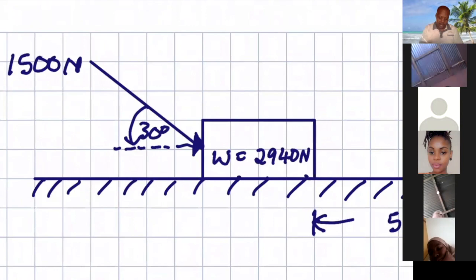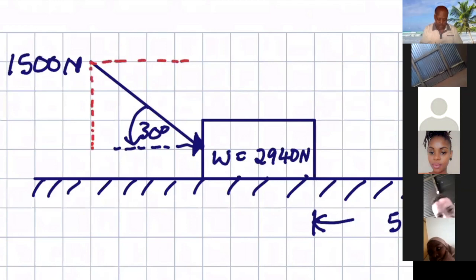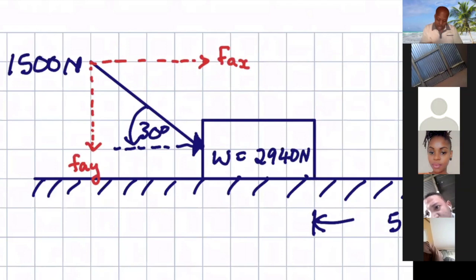Again, we have to resolve the forces into the y as well as the x. So there'll be a force that's acting that way. We can call that one fax, and there'll be another one going down that we call fay.